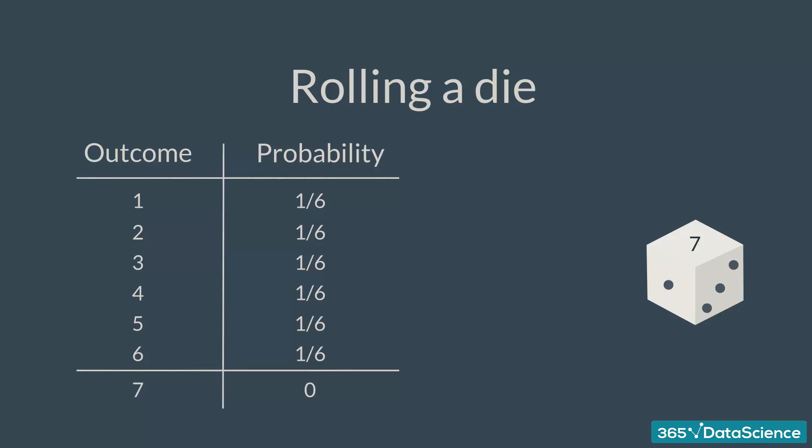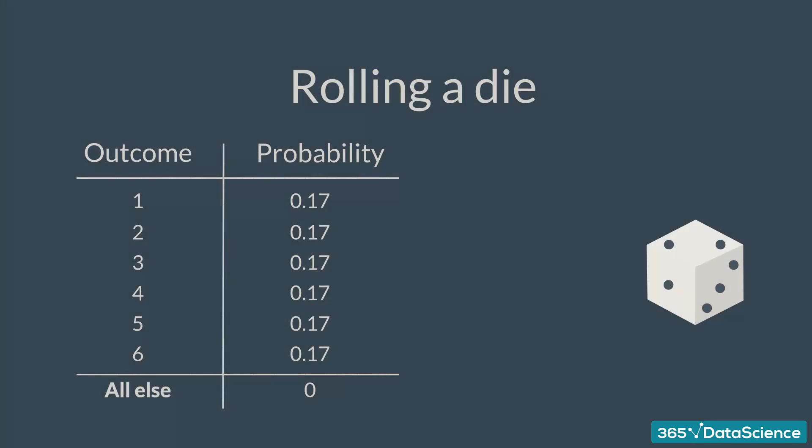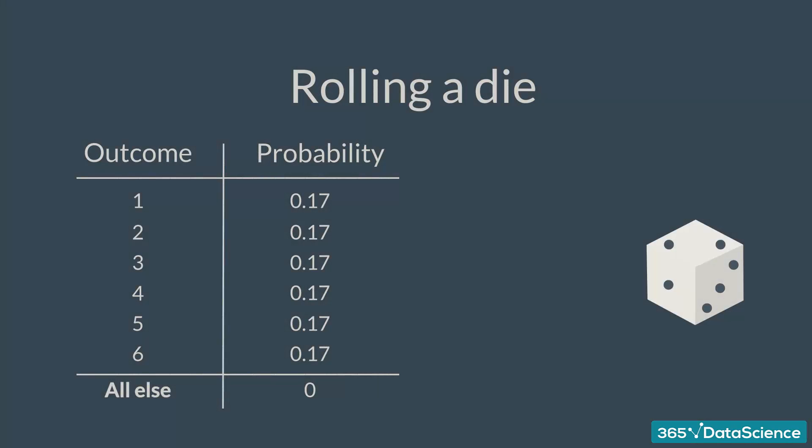The distribution of an event consists not only of the input values that can be observed, but is made up of all the possible values. So, the distribution of the event, rolling a die, will be given by the following table. The probability of getting one is 0.17. The probability of getting two is 0.17, and so on.